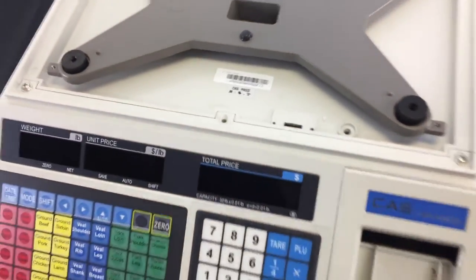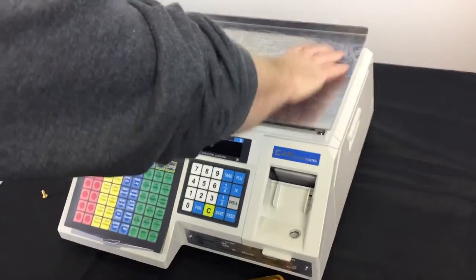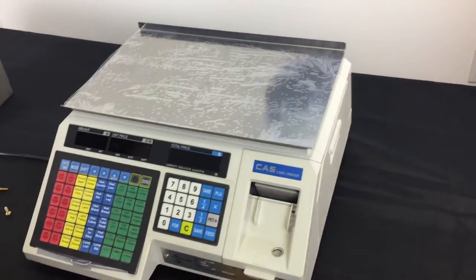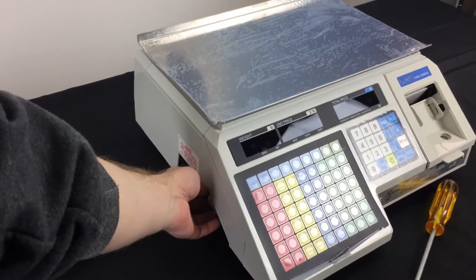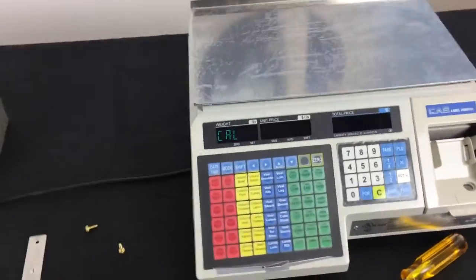Now that we've slid that back to the left hand side, we're gonna put the platter back on the scale. Next step is to locate the power switch on the left hand side of the scale, which is right here, in order to turn the scale on.